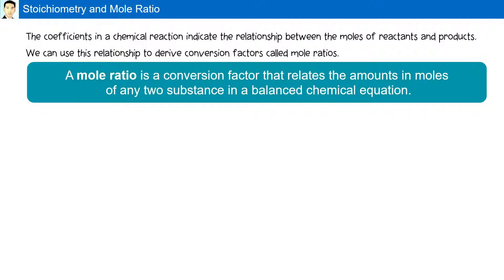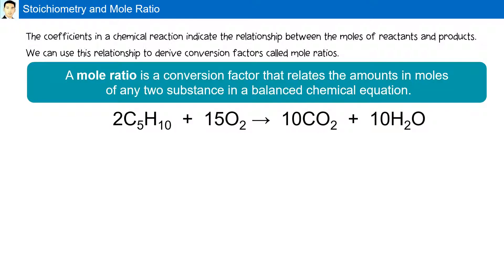A mole ratio is a conversion factor that relates the amounts in moles of any two substances in a balanced chemical equation. For example, given the chemical equation C5H10 plus O2 gives us CO2 plus H2O, a balanced chemical equation shows how many moles of C5H10 will react with how many moles of O2 to produce CO2 and H2O.